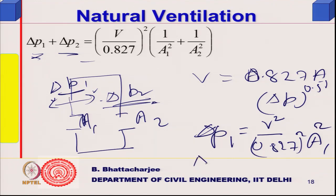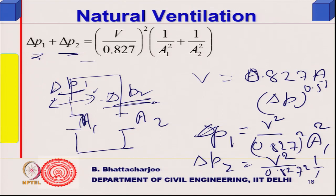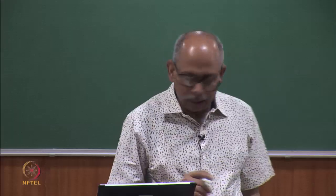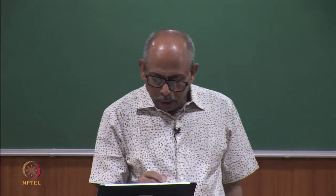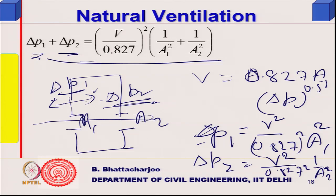Similarly, delta P2 equals v-squared divided by (0.827-squared times A2-squared). Summing these gives the total pressure drop. If I'm looking for the equivalent flow through the room, I can assume an equivalent area expressed as 1/A-squared equals 1/A1-squared plus 1/A2-squared.